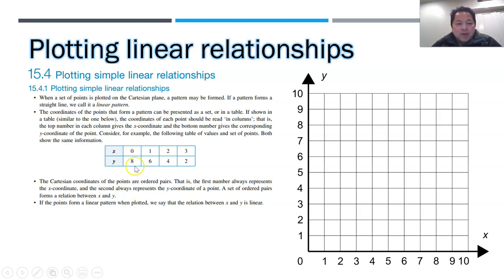So using this example given to us, you have x is 0, y is 8, x is 1, y is 6, x is 2, y is 4, x is 3, y is 2. So this is actually talking about the relevant points given. So the first one is 0, 8, next one is 1, 6, next one is 2, 4, next one is 3, 2.